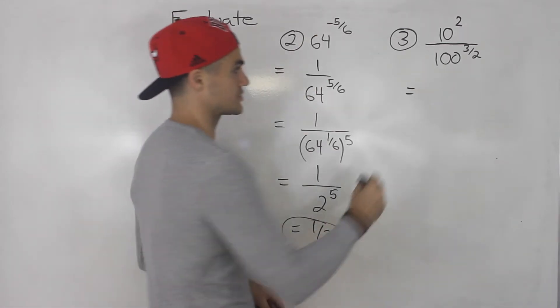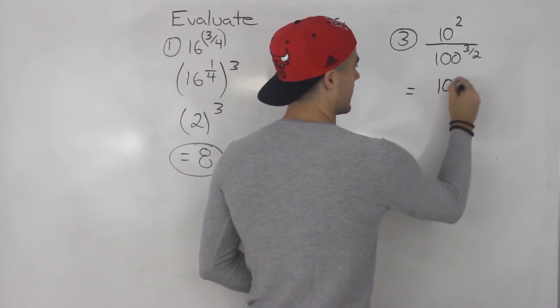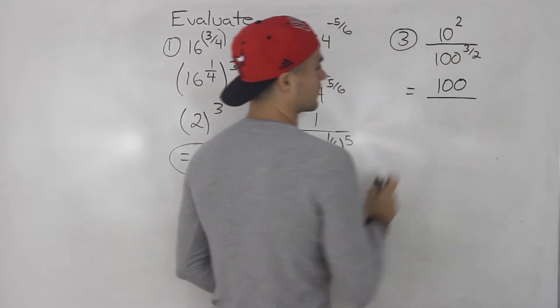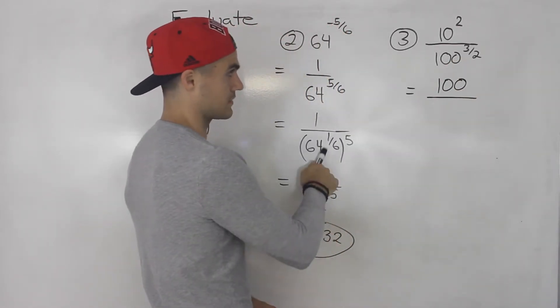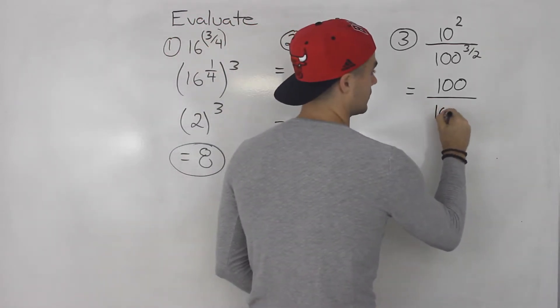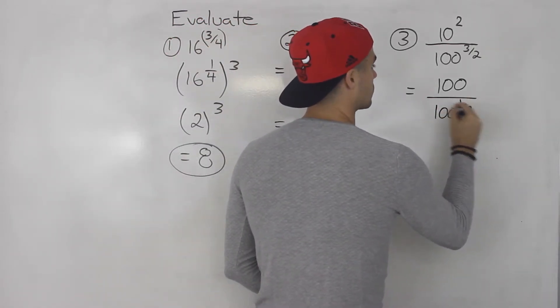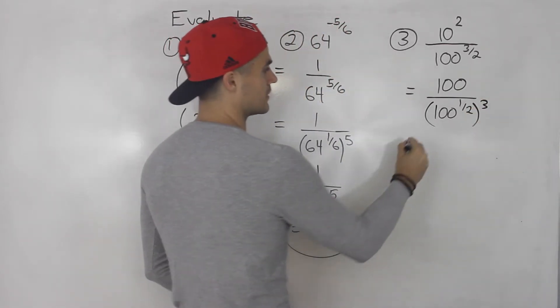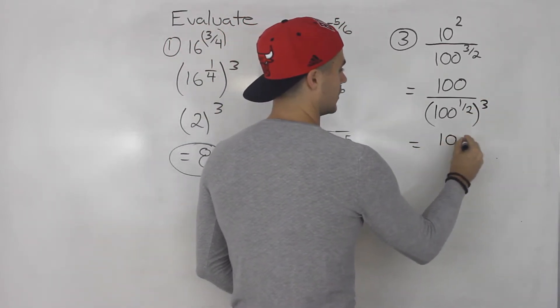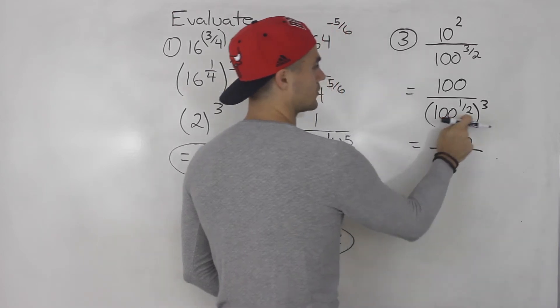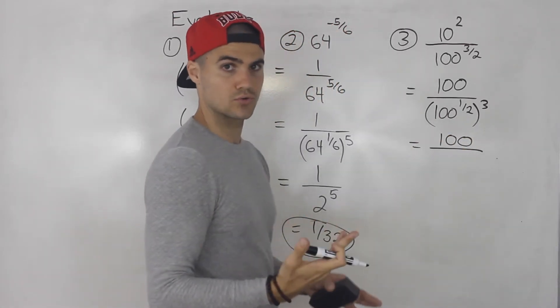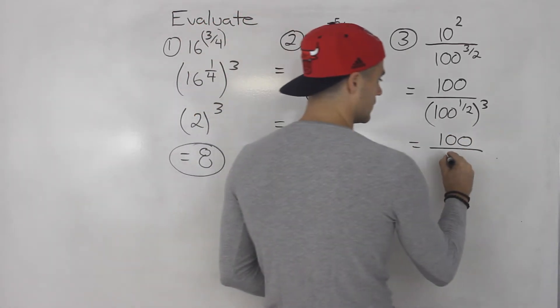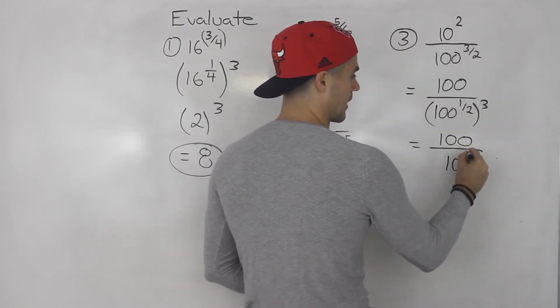10 to the power of 2, that's just 100. And then 100 to the power of 3 over 2—same method as before. I'm going to take 100 to the power of 1 over 2, and then take it to the power of 3. 100 still stays in the numerator. Now 100 to the power of 1 over 2, that's like the square root of 100, which is 10. Then we'll have that 10 to the power of 3.